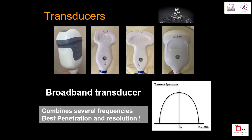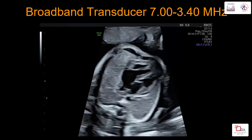We can compare the transducer to camera lenses — if we have multiple lenses we can always get a better image. Nowadays all probes coming with ultrasound machines are broadband transducers, combining several frequencies for the best penetration and resolution. We have seen that a range of 3.4 to 7 megahertz is typical — these are all broadband probes giving better resolution and penetration.